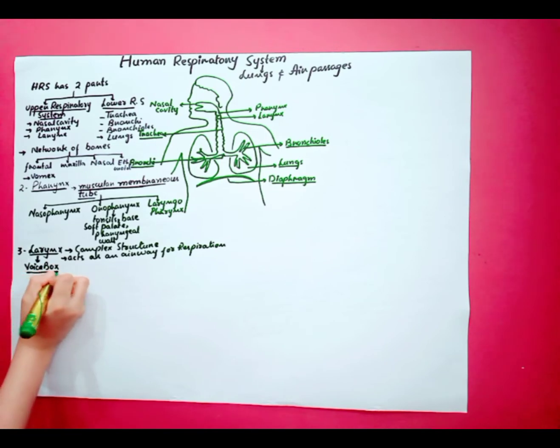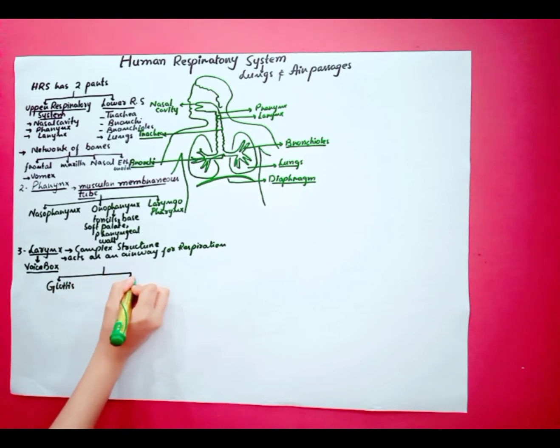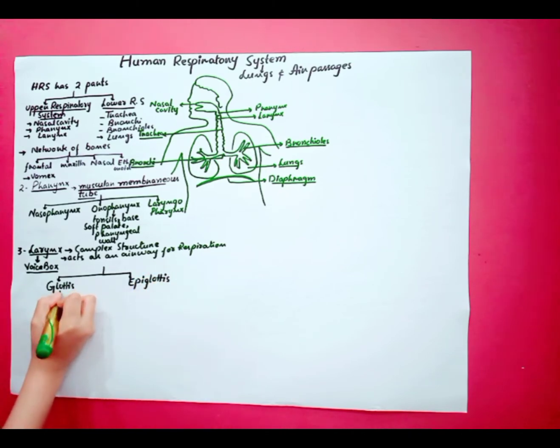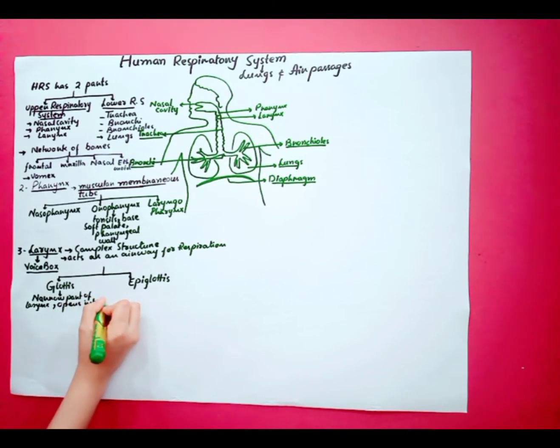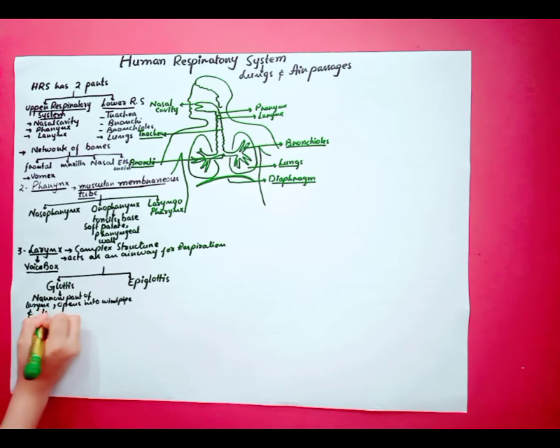The larynx helps in sound production. This larynx has two main structures: glottis and epiglottis. This glottis is the narrowest part of larynx. It opens up into windpipe and is responsible for sound production.